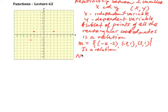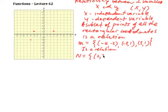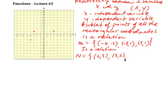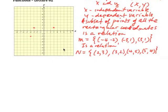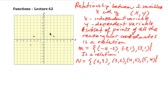Let's suppose I take another one: (2, 3), (3, 2), (4, 5), and (5, 4). So 2, 3 would be here; 3, 2 here; 4, 5 here; and 5, 4 here. That's a subset too, so this is also a relation. Any subset is a relation.